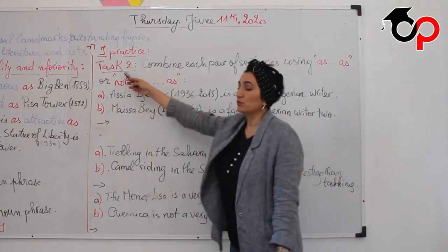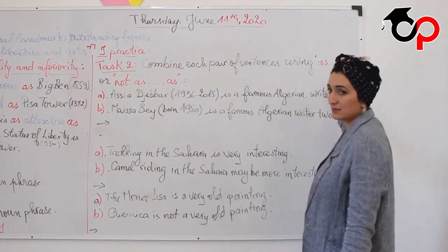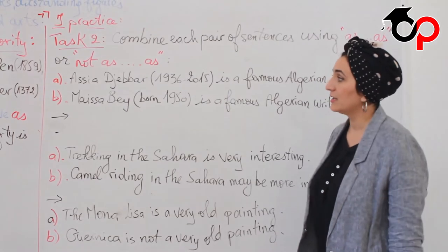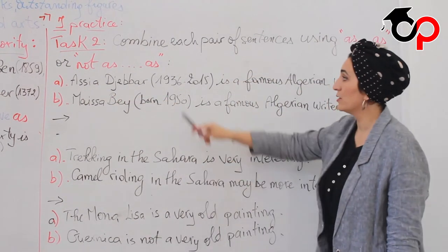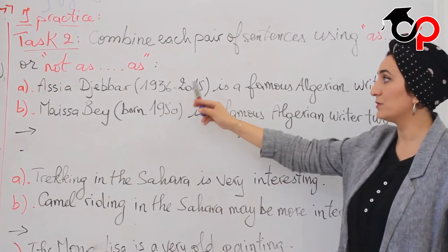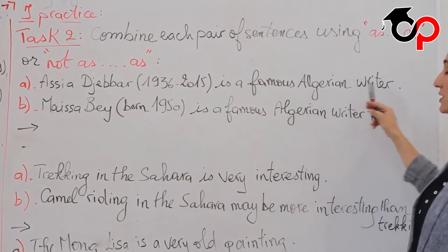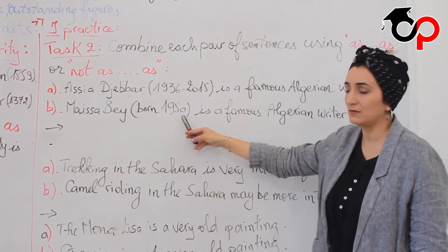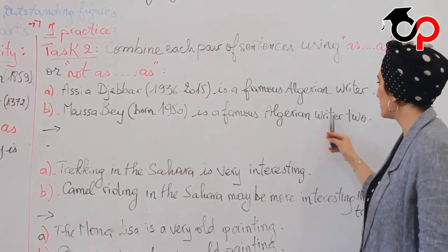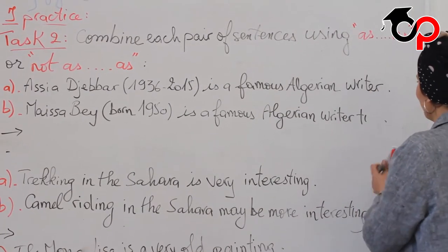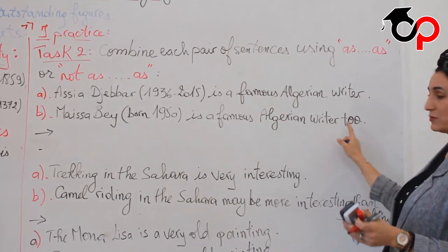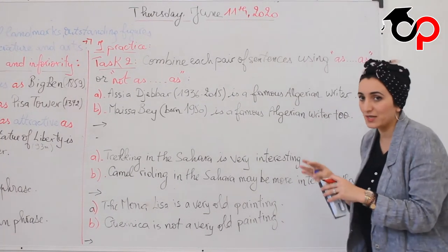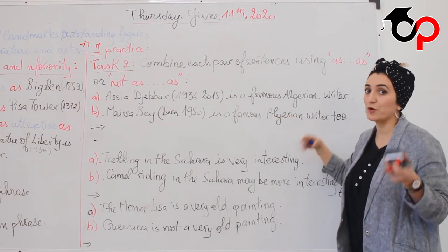Now let's move to Task 2: combine each pair of sentences using 'as as' for equality or 'not as as' for comparative of inferiority. First example: Assia Djebar, born in 1936, is a famous Algerian writer. Maya Bâ, born in 1950, is a famous Algerian writer too. The number 2 means they are equal — they are both popular, famous writers.